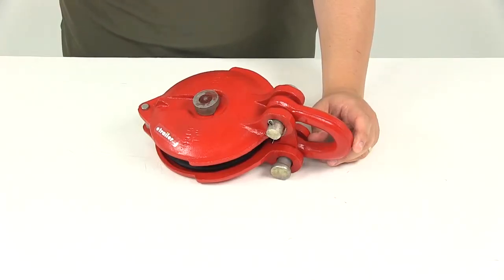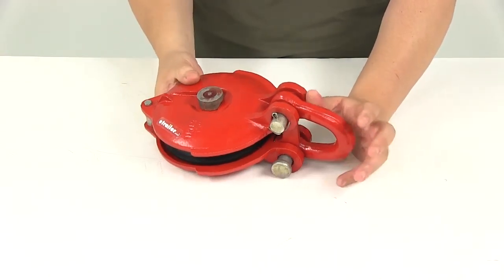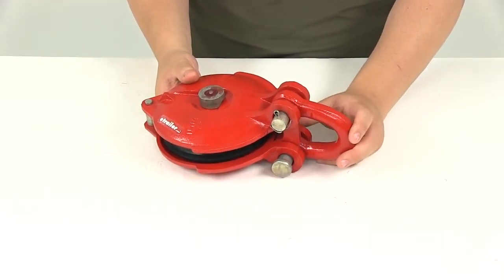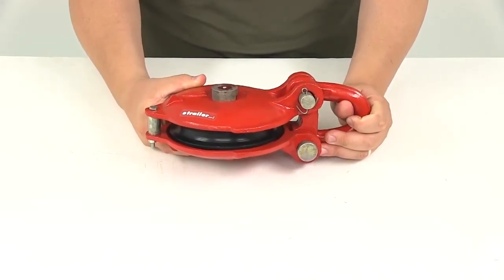Today we're going to be taking a look at part number BDW20028. This is the Bulldog Pulley Block. The pulley blocks are going to increase your winch's pulling power. It's also going to allow you to change the direction of pull without damaging your rope.